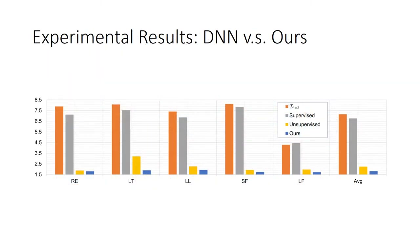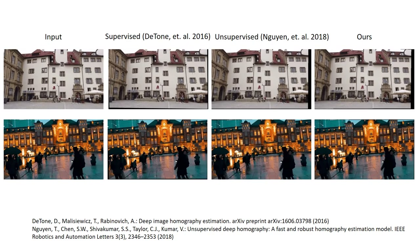For the experimental part, we first compare our method with two existing DNN-based solutions. The chart shows the error across the five scenes, and our method has minimal error compared with others. In the first row of image examples, the supervised method fails when applied to real images due to heavy reliance on ground truth homography. In the second row, if the two images differ in luminance, the photometric error used by Nguyen's unsupervised method fails. In comparison, our method can handle both cases well.